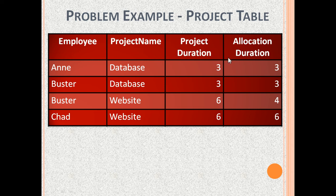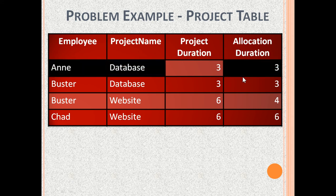AllocationDuration can also be the same in multiple rows. However, Employee, ProjectName and AllocationDuration together are unique in every row — it is a candidate key because one employee can be allocated to one project just once. ProjectDuration is not a part of this candidate key; it depends only on project name. So this table is not in 2NF.